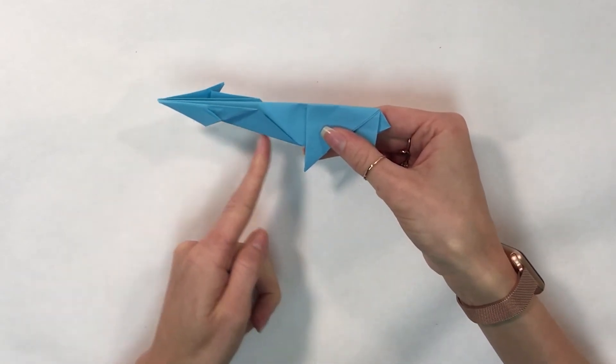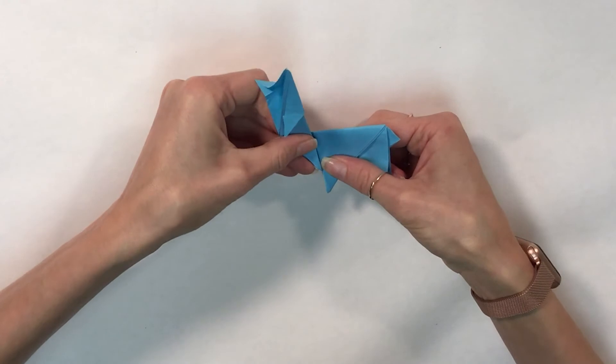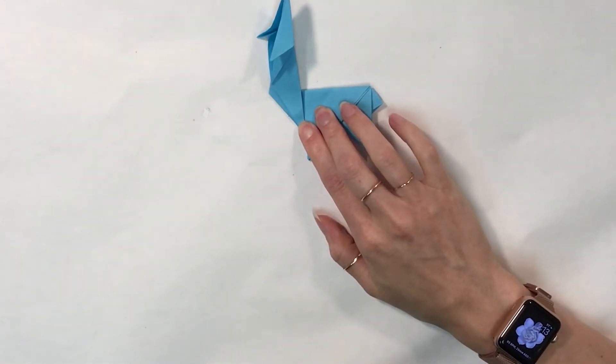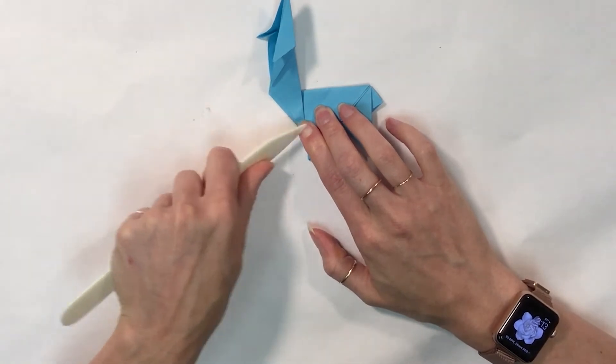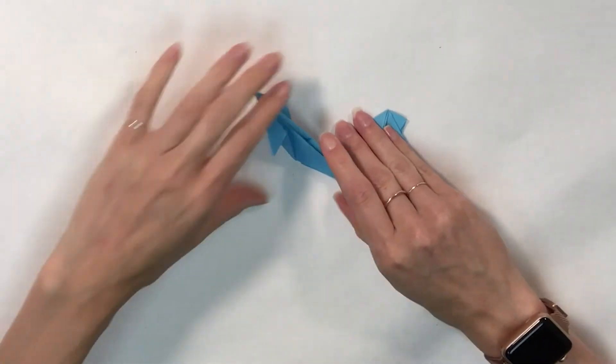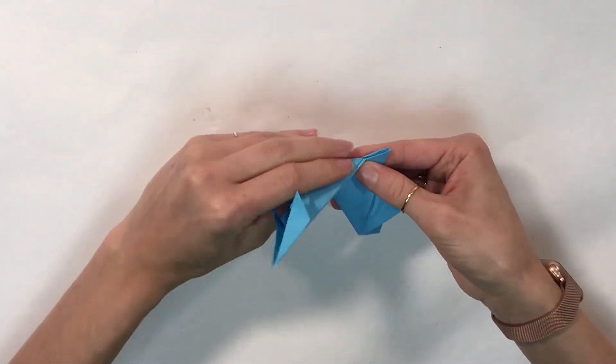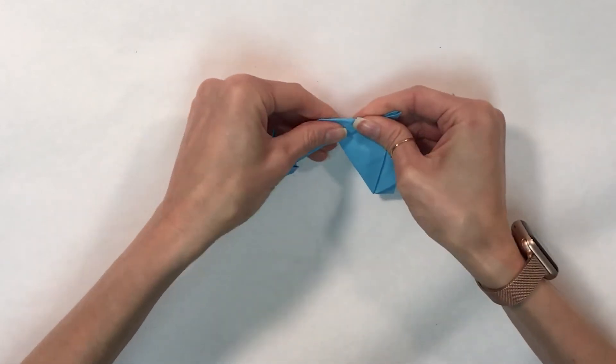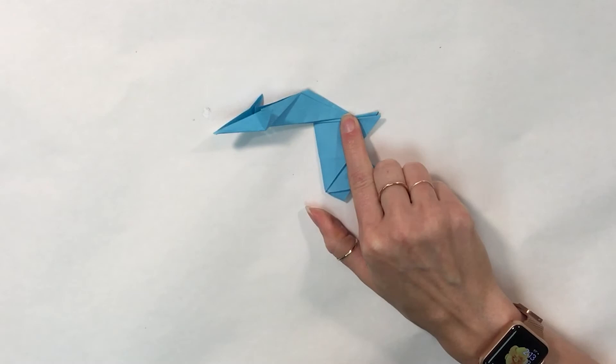Next, I'm going to fold the neck against the line for the body. And again, I may want to go over that fold with a bone folder. And reverse that fold again just to reinforce the fold line.